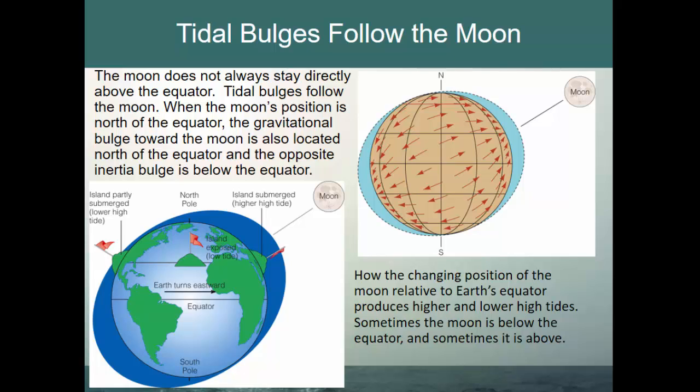The moon does not always stay directly above the equator, and tidal bulges follow the moon. Not only is the moon moving ahead 12.2 degrees each day, it's also not always directly aligned with the equator. When the moon's position is north of the equator, the gravitational bulge toward the moon is also located north of the equator, and the opposite inertial bulge is below the equator on the opposite side of the earth.